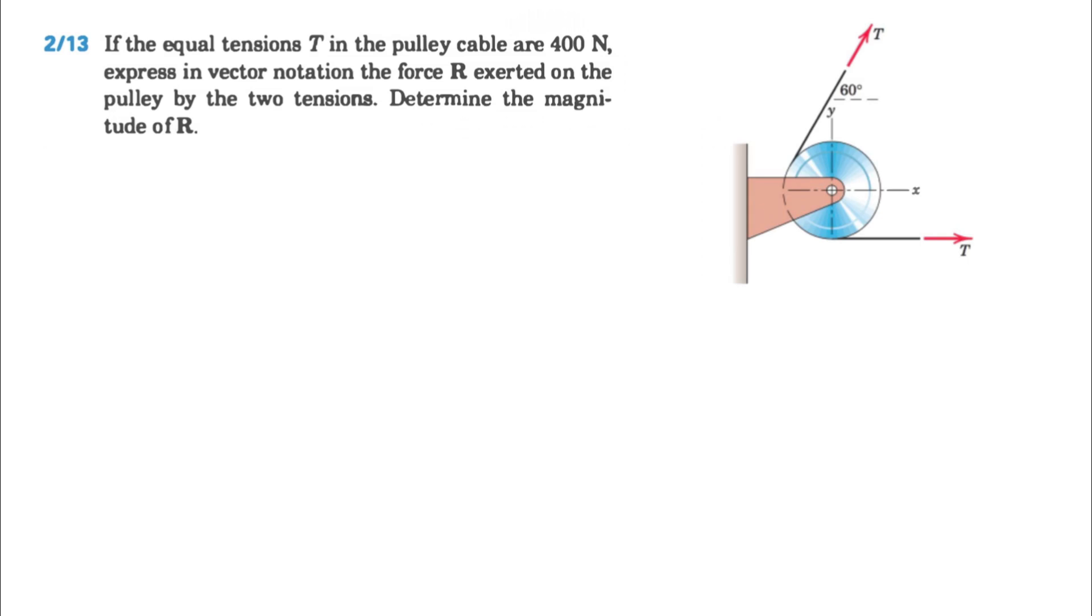So, before we start, we can see in the figure that we have the positive direction for X and Y, and let's call the X component of the R, Rx, and what we have in here, we have the X component of this T, which is in the X direction, and there is no Y component.